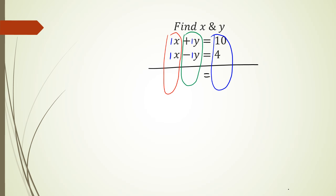If I add 1x plus 1x, I'm going to get 2x. If I add 1y minus 1y, I'm actually going to get 0, so just leave it empty. And 10 plus 4 equals 14. So by adding these two equations, I have eliminated the variable y, and I now have an equation that says 2x equals 14, which means x equals 14 divided by 2, and x equals 7.